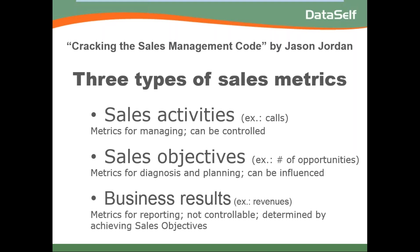The third type is business results — how much you actually sold. These are metrics for reporting, and you have no control over them because people giving you money is at their discretion. It's pretty much determined by doing the sales activities and achieving your sales objectives. Interestingly, Jordan's research found that only 17% of the metrics were around sales activities — most were on sales objectives and some on business results. If you're managing teams, I highly recommend this book for insights on what metrics to put in place for better sales management.